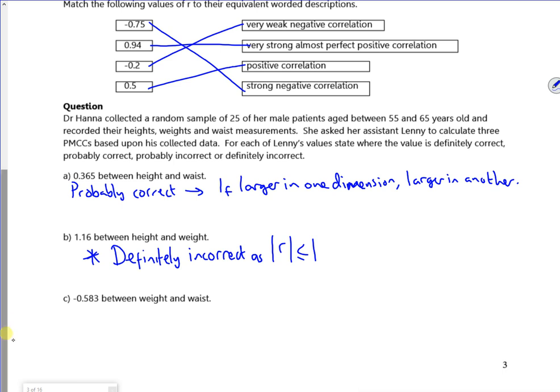And then minus 0.538. So if you think, that's kind of saying that your waist gets smaller as your weight goes up. So that's probably incorrect.